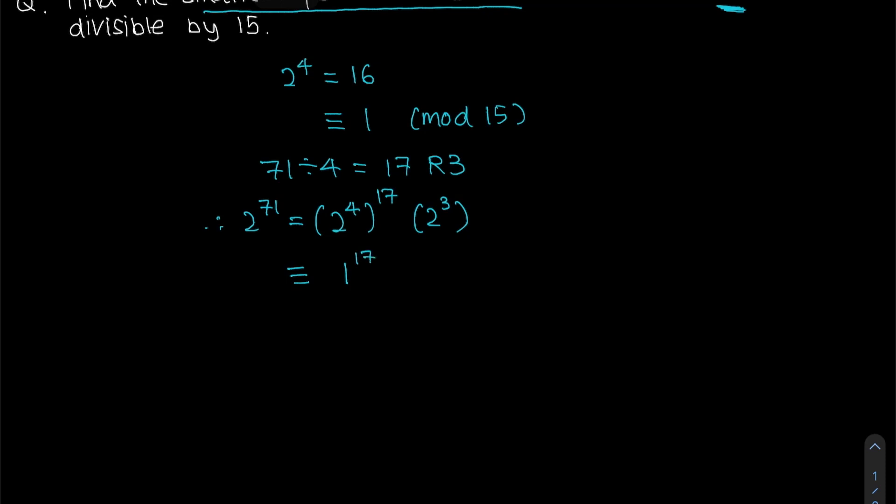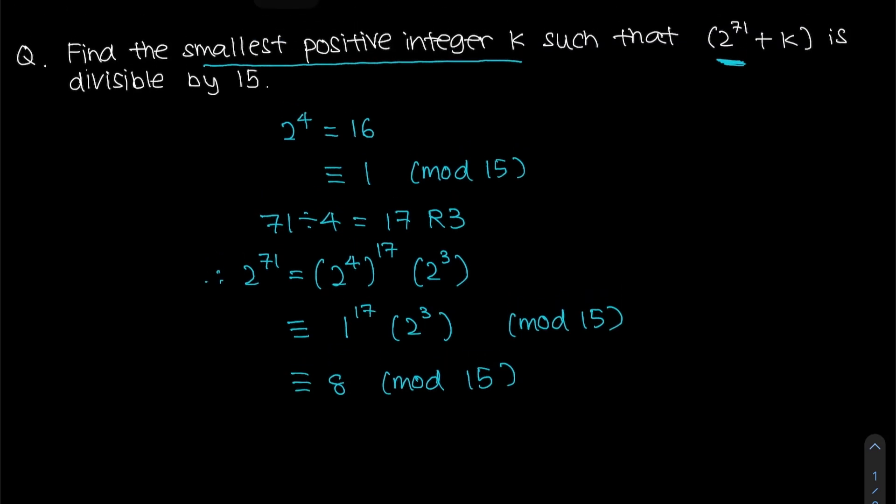And 1 to the power of 17 is simply just 1, and 2 to the power of 3 is simply equal to 8. So we will just write this as 8 mod 15. What this means is that if we take 2 to the power of 71 divided by 15, our remainder will be 8.